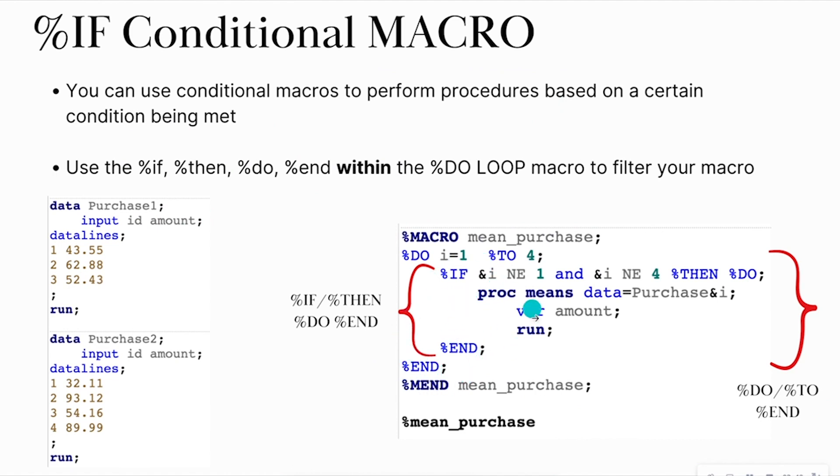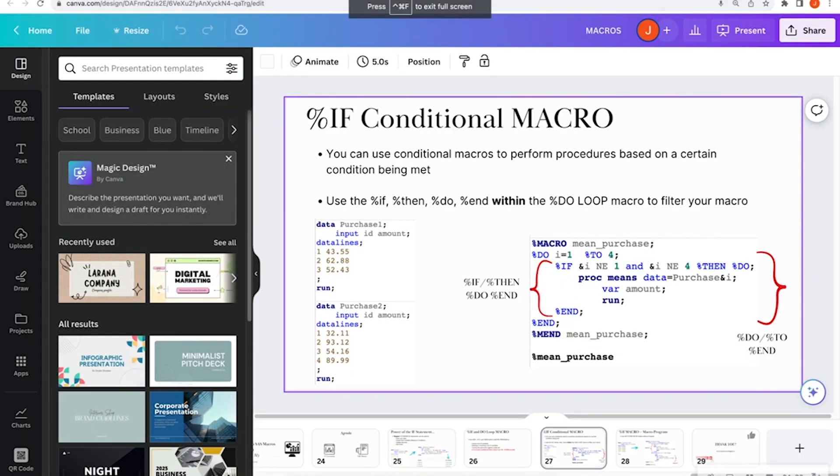So inside of the outer loop is my do loop, which I have here, where it says do I equals one, two, four, because I have four purchase data sets. And then I end that. And then within this do loop, I have some filtering. So if the I is not one or four, so say, for instance, I only care about months two and three. So if I is not equal to one, and it is not equal to four, then I want to do this proc means procedure, where I'm going to take the purchase and I, so in this case, purchase two, purchase three, get the proc means for the amount column, and then run it. And then once I execute this by just calling the name of the macro, I should get the results for data sets two and three only. So let's look at this right inside SAS Studio itself.